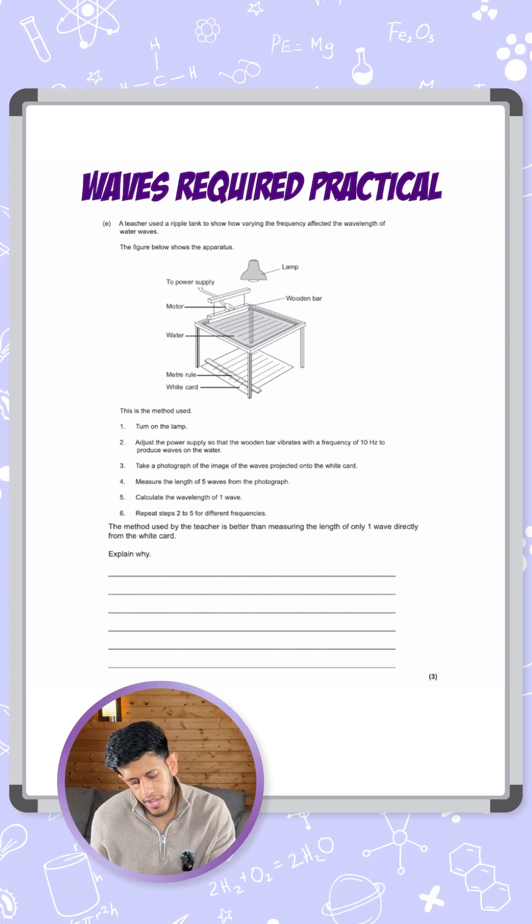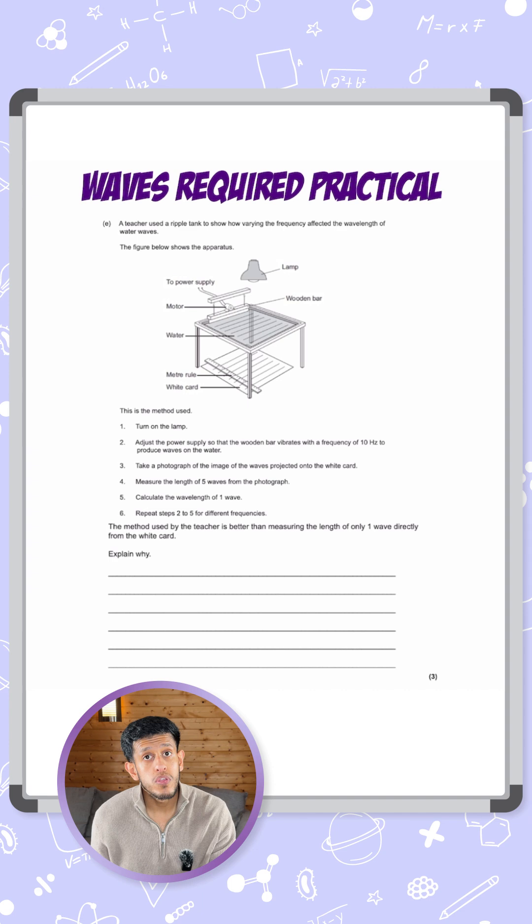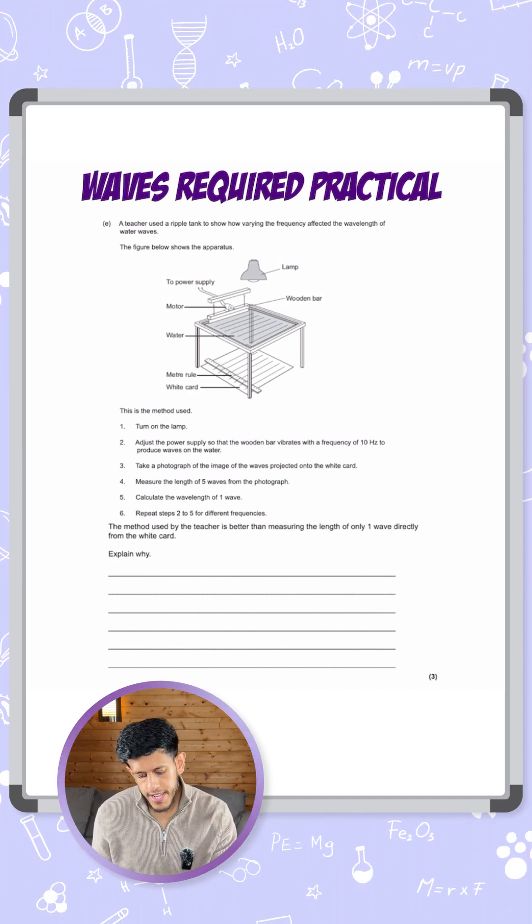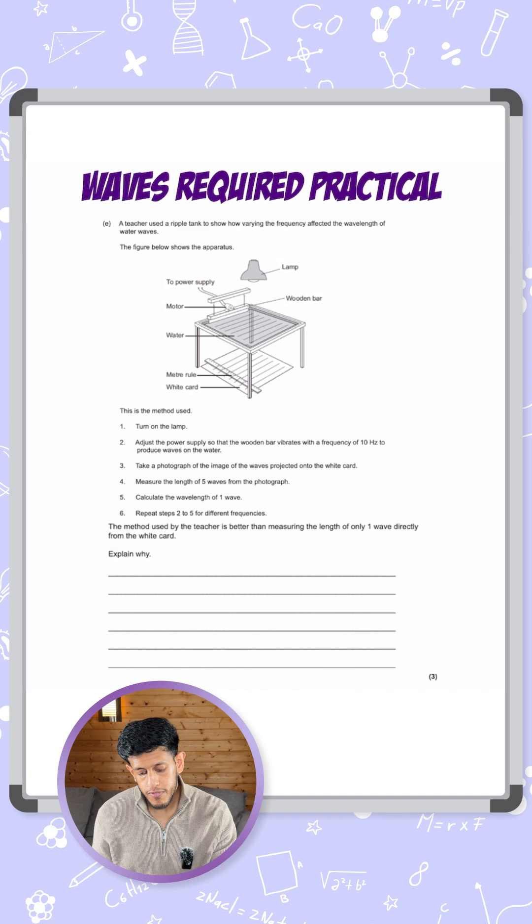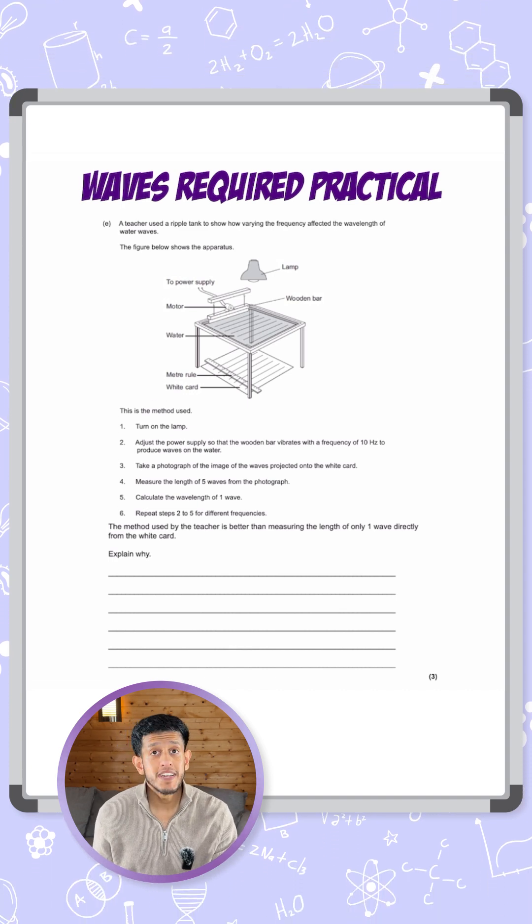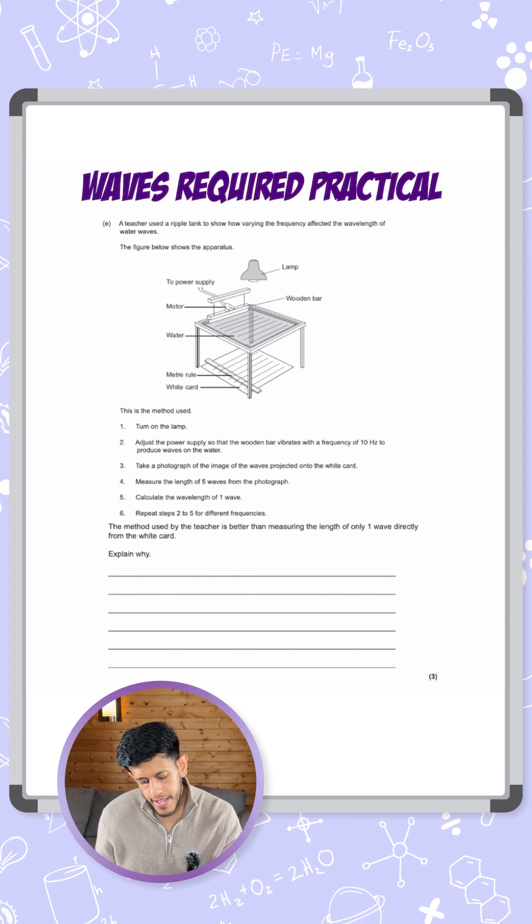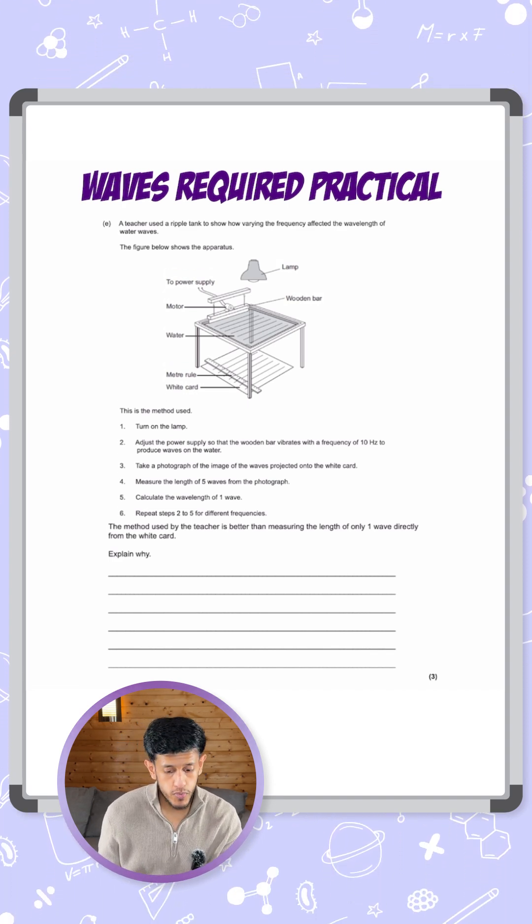Now here's the method: turn on the lamp, adjust the power supply so the wooden bar vibrates at a frequency of 10 Hertz to produce waves in the water. Take a photograph of the image of the waves projected onto the white card, then measure the length of five waves from the photograph. Calculate the wavelength of one wave, then repeat steps two to five for different frequencies.